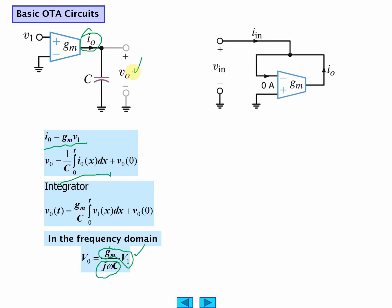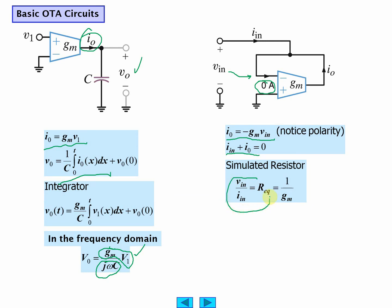This is a simulated resistor. I in and I out have to be equal for zero amps on the input. The input VN is on the same node as the input, so you get I out is GM, negative GM VN. Given this fact also, then you get VN over I in is equivalent to a resistance which is given by the reciprocal of the transconductance.